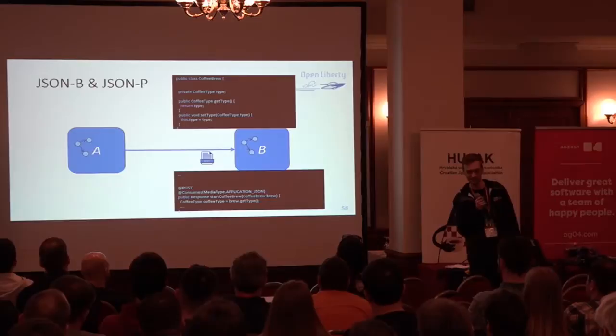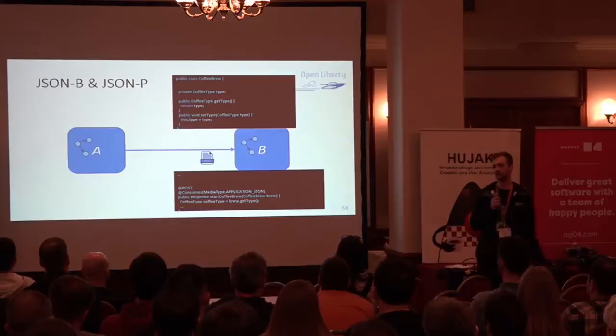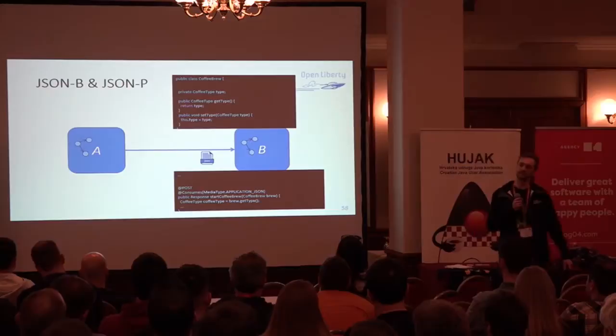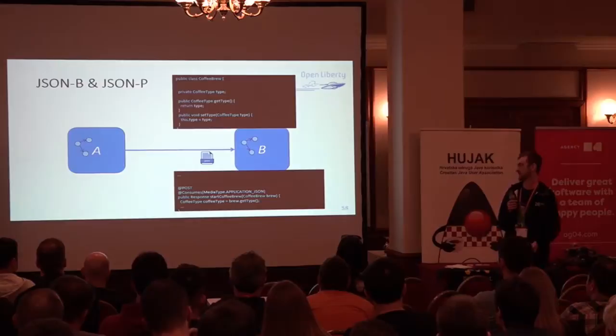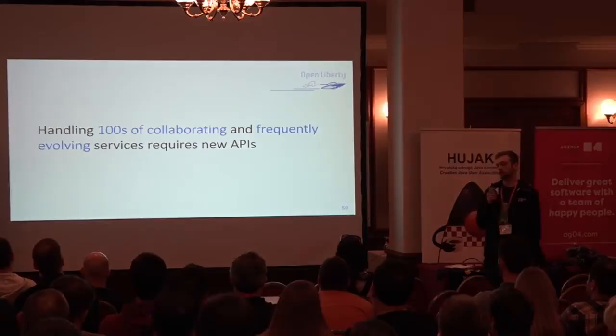JSONB and JSONP are new ones. JSONB allows you to take a Java object, throw it into JSONB, and it turns it into a JSON object. You send that to a different microservice, and the receiving microservice turns it back into a Java object. JSONP handles parsing — if you don't want the whole object, you can parse certain parts of the JSON, allowing you to quickly send data between microservices.